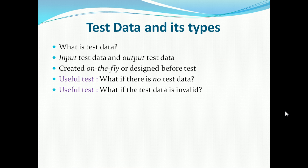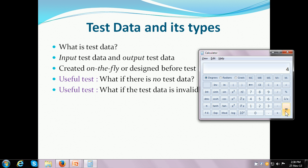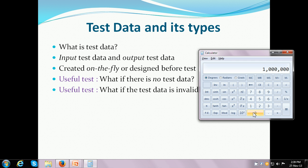One more useful test is: what if the test data is invalid? For example, let's say I have a number and I want to find out the factorial. I type in the number and click on the factorial operator — it shows me the factorial of 10, that is 10 into 9 into 8 until it reaches 1. If I provide an invalid input, say 1 million whose factorial is going to be very large and the Windows calculator cannot process that, the system correctly indicates that it is an invalid input — the system will not accept such a large number and cannot store the factorial of such a large number. So in your system also, you should test what if the test data is invalid.